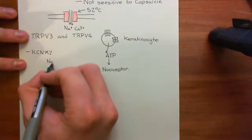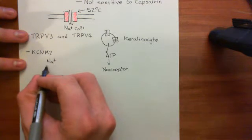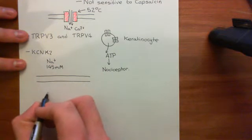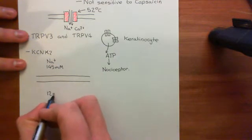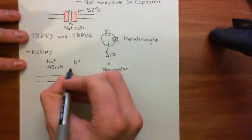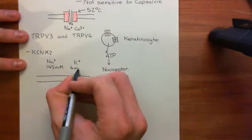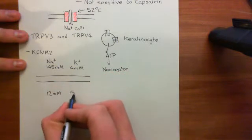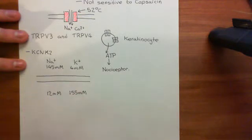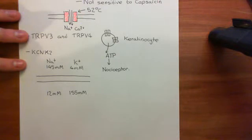For sodium, we have a concentration extracellularly of around 145 millimolar, whilst the concentration intracellularly is around 12 millimolar. Meanwhile, for potassium, the concentration extracellularly is around 4 millimolar, whilst the concentration intracellularly is around 155 millimolar. Those are our concentration gradients — that's the starting point for the building up of a resting membrane potential. Now, what you need is a membrane that is permeable to sodium and potassium ions.